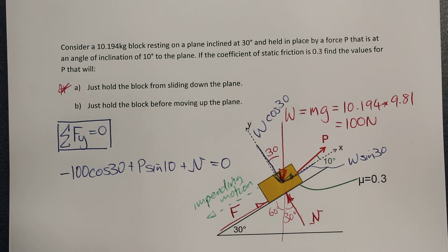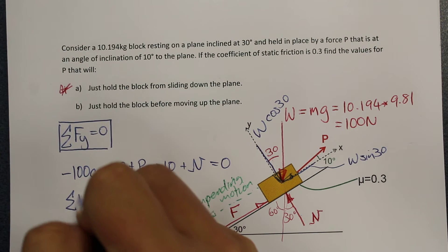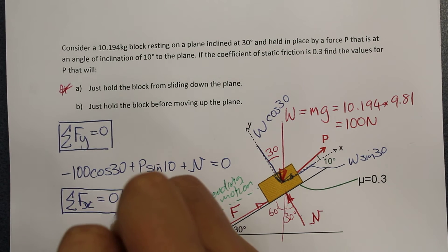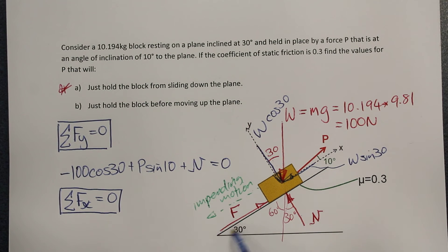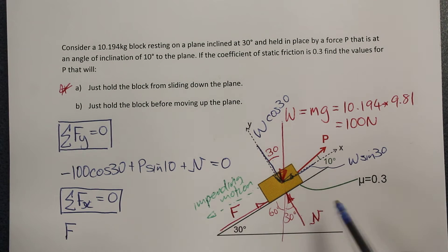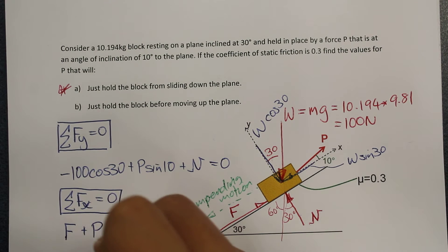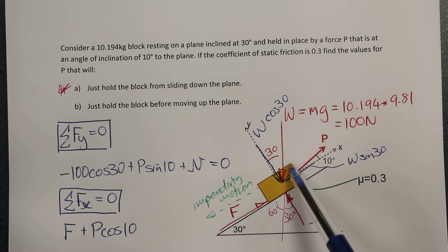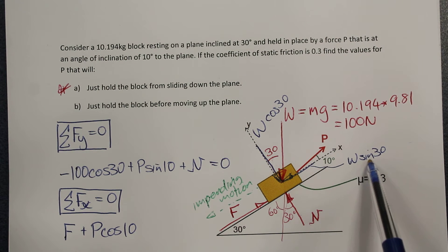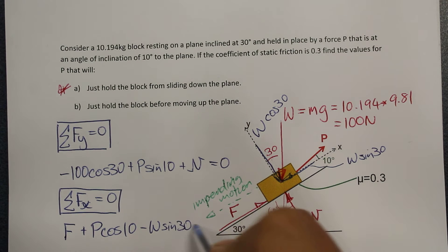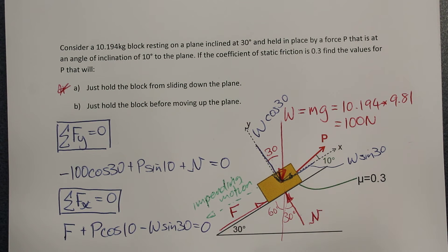The second equation is that the summation of forces in the x direction equals zero. We have the friction force F acting up the incline in the positive x direction, plus P cosine 10 acting up the incline, and minus W sine 30 acting down the hill in the negative x direction. So that gives us our second equation.